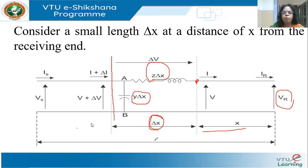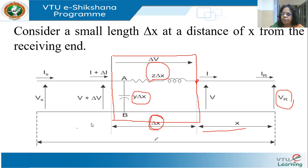Think of this as a black box. Delta V is the drop across these two terminals. The voltage on the input side would be V plus delta V, because V is at the output port of this section. Likewise, I denote the current at the input as I plus delta I.